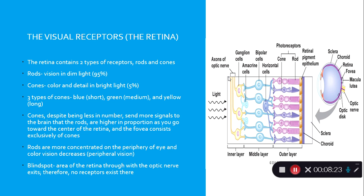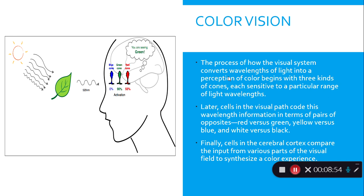Everyone has a blind spot. Your book has a fun example where you focus on a lion tamer and eventually can't see the lion anymore. As you get closer to the book, when you can't see the image, that's your blind spot. The reason is you have no receptors there — that's where all visual information exits through the optic nerve, so there's no room for receptors.